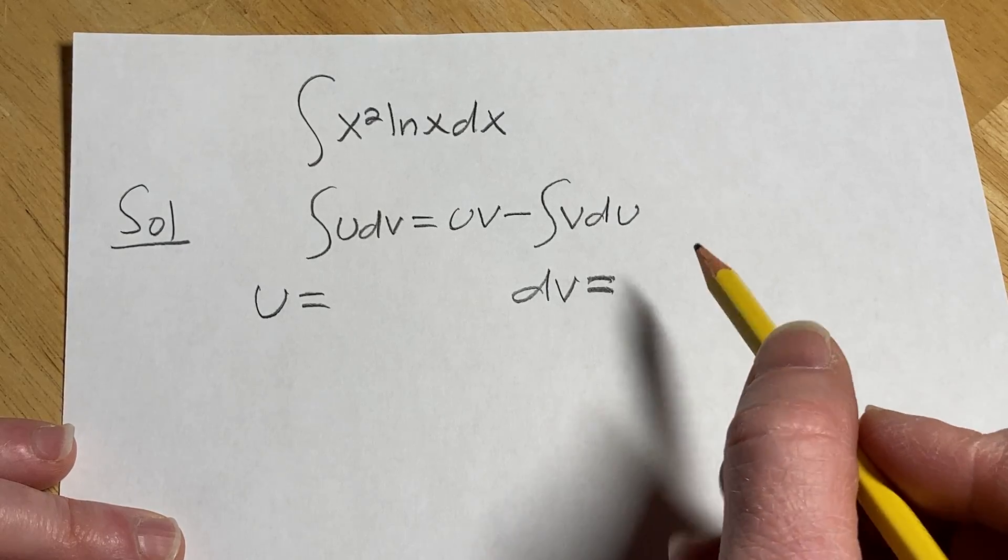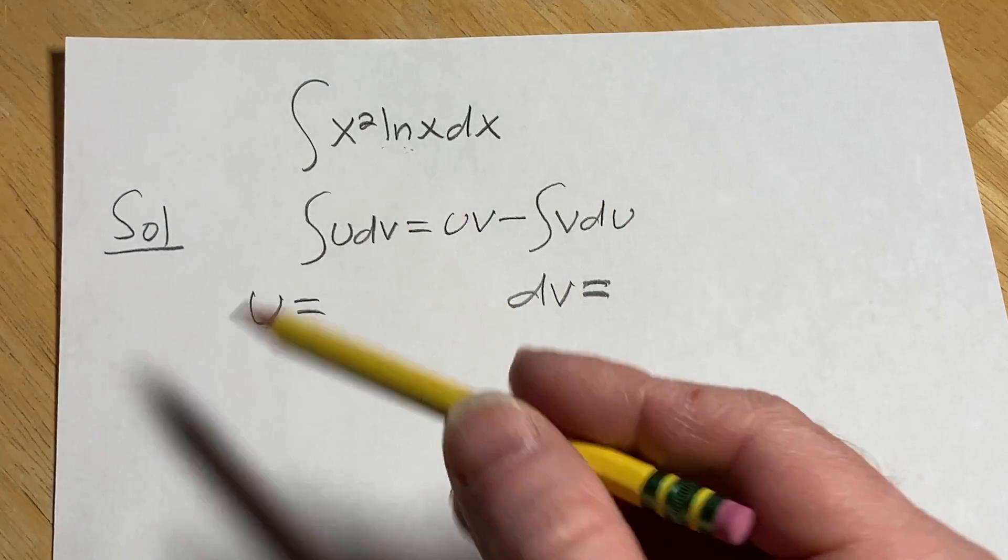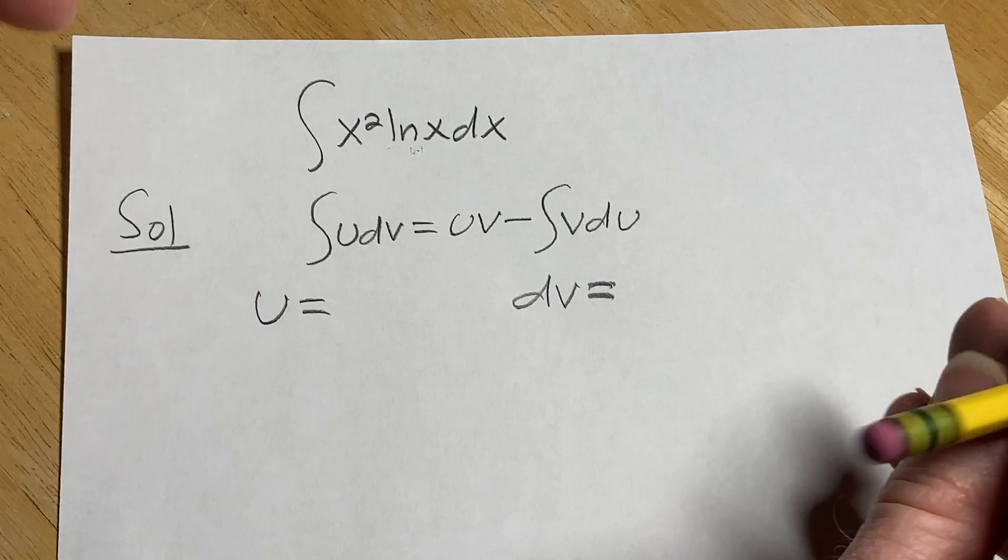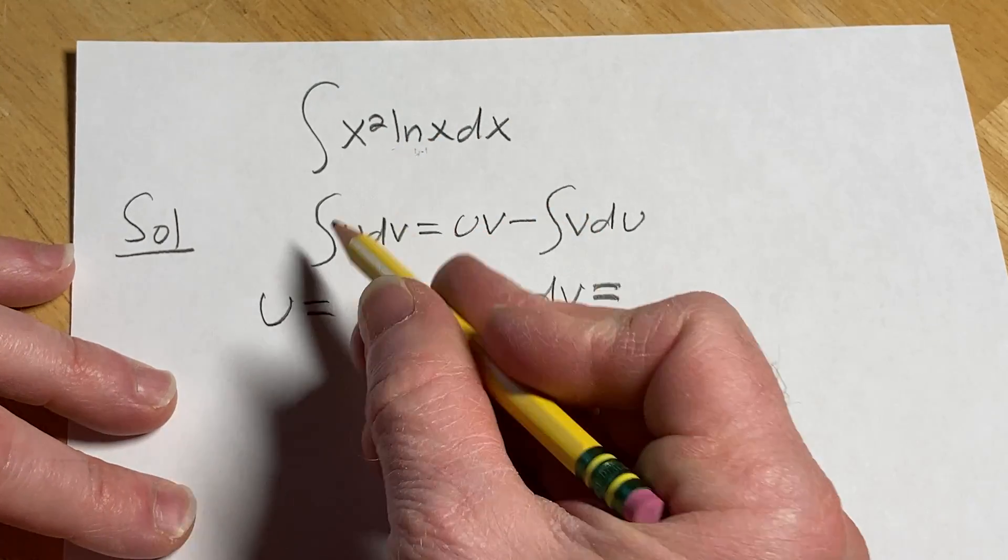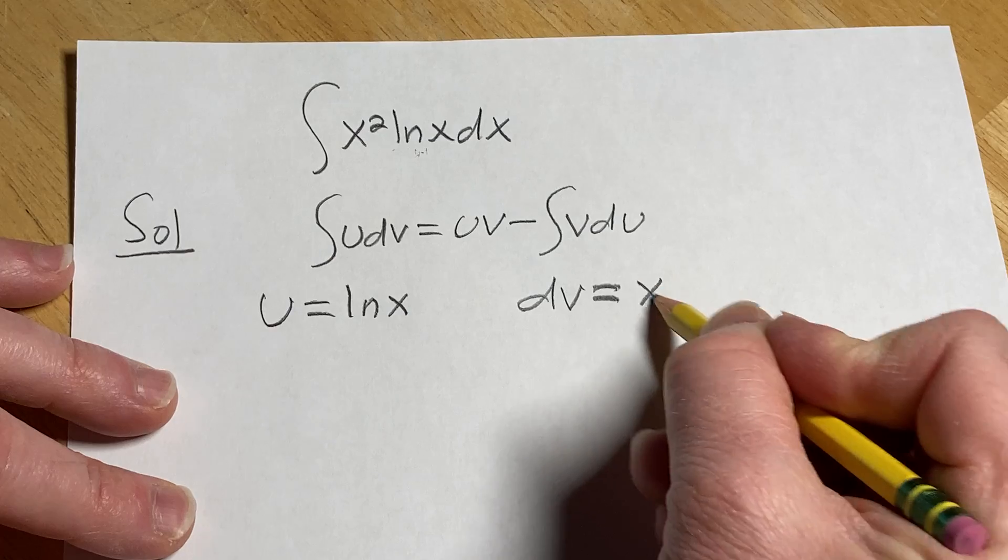In this particular case, we do know how to integrate ln x but it does require integration by parts. So we're going to pick U to be ln x and dV to be x squared dx.